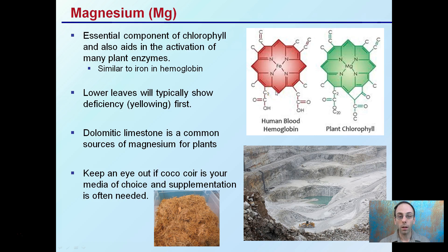Magnesium is the second one — it's a central component of chlorophyll and also aids in the activation of many plant enzymes. We see the comparison here of plant chlorophyll with magnesium in the center. These structures look very similar to hemoglobin in the human body, which is mining oxygen, with magnesium being that central molecule important for chlorophyll production.